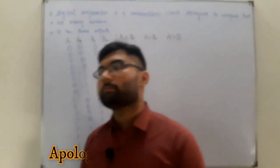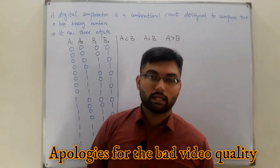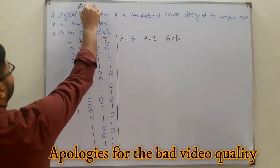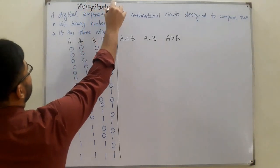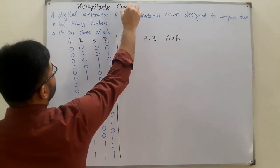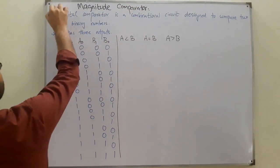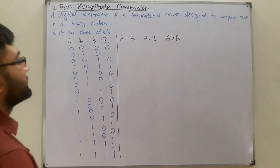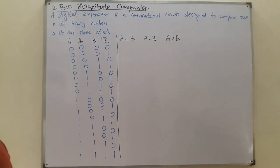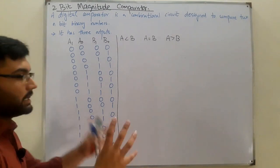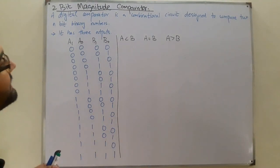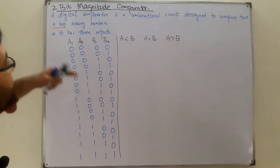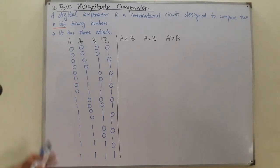Bismillahirrahmanirrahim, Assalamualaikum. Salam Khan here, and today we look at the magnitude comparator. Specifically, we are discussing a two-bit magnitude comparator. As the name suggests, it will compare two numbers — any n-bit binary numbers. Today, the bits we are discussing are two-bit binary numbers.